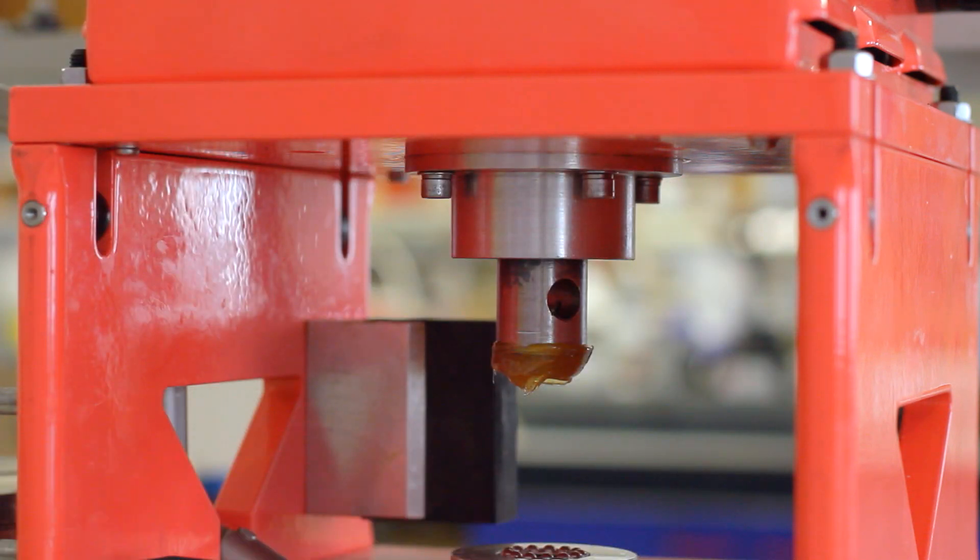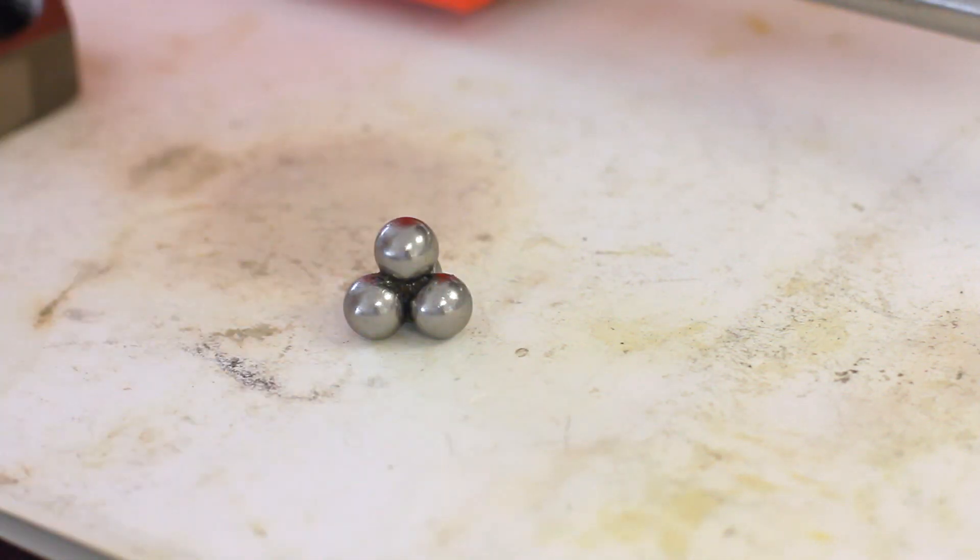The lubricant is not able to control the metal to metal contact between the balls. The friction and wear causes the temperature to increase and the balls melt and weld.